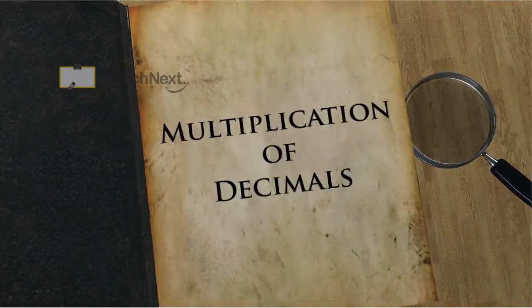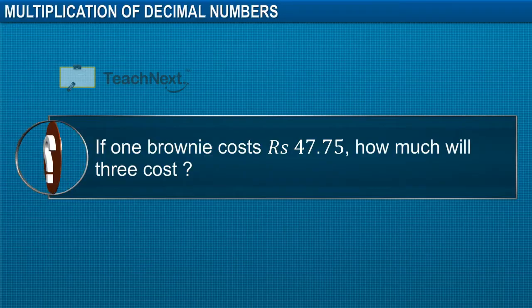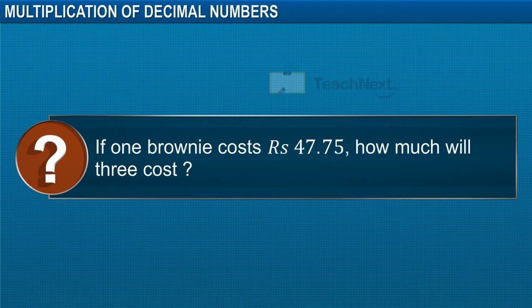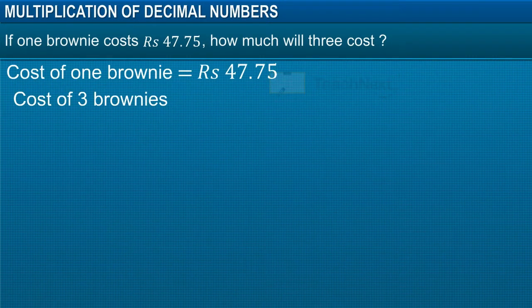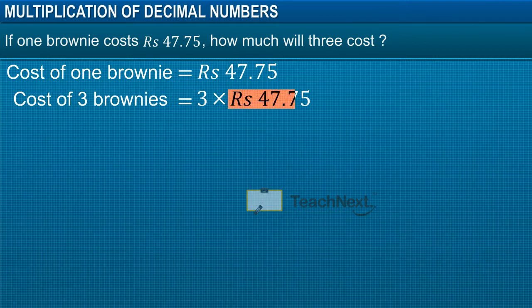In this module, you will learn how to multiply decimal numbers. If one brownie costs 47 rupees and 75 paisae, how much will three cost? To calculate the total money spent on three brownies, we just multiply 3 by 47.75. Now, 3 is a whole number and 47.75 is a decimal number.